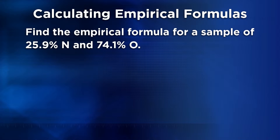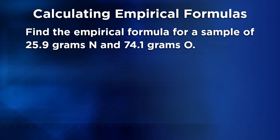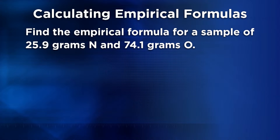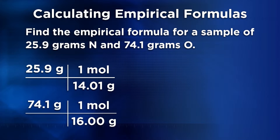We're given the percent composition of this compound to start with. As the rhyme says, if you're given percent, change it to mass. We can say that we have 25.9 grams of nitrogen and 74.1 grams of oxygen — together they equal a mass of 100 grams. The next step is to convert to moles, or from the rhyme, mass to moles. We use the molar masses of the elements to convert from grams to moles of each element.